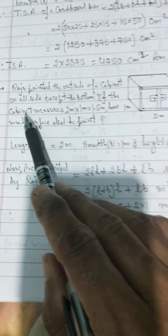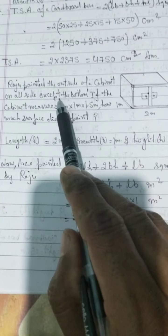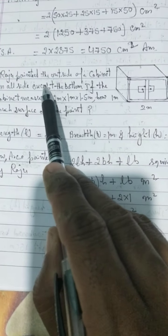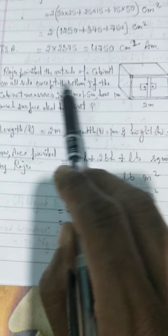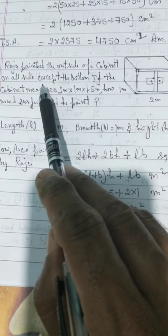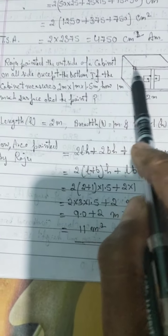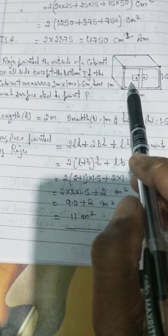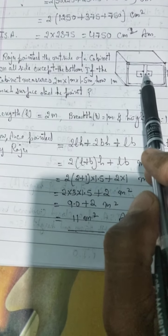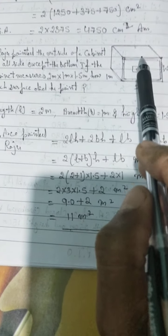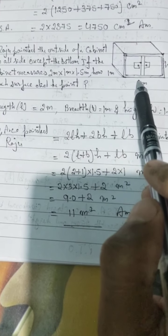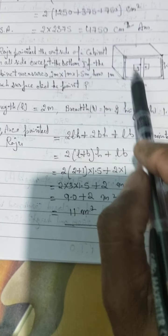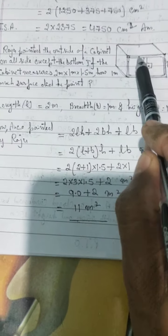Question 3 is taken from your book example: Raju painted the outside of a cabinet on all sides except the bottom. This cabinet is given in the shape of a cuboid — it has six faces. We leave out the bottom and take all the other five surfaces: one, two, three, four, and five.